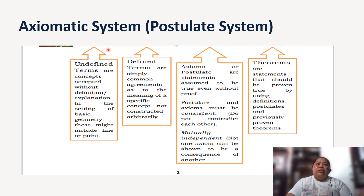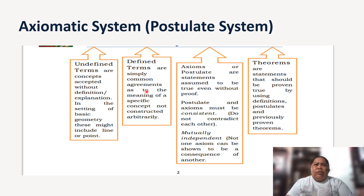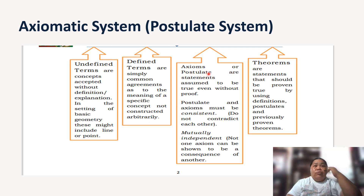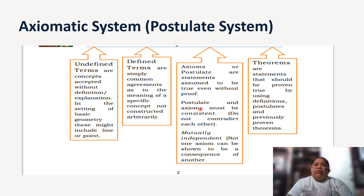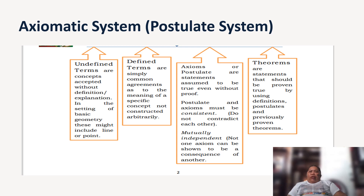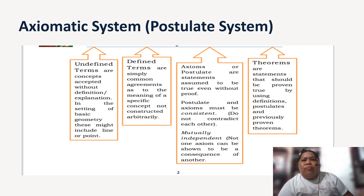We have the axiomatic system, or postulate system, which has four components. First, undefined terms — these are concepts accepted without definitions, such as line and point in basic geometry. Second, defined terms — these are common agreements as to the meaning of a specific concept and are not constructed arbitrarily. Third, axioms or postulates — statements assumed to be true even without proof; they must be consistent and mutually independent. Fourth, theorems — statements that should be proven by using definitions, postulates, and previously proven theorems.